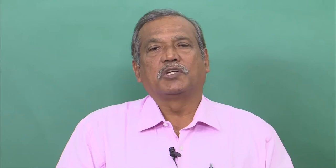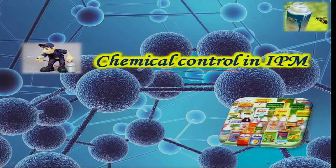What needs to be done for using chemical pesticides? What are the strategies to be considered? What are the points to be remembered? We should discuss these in the next two to three classes. Chemical control and IPM — we will relate these over the next two to three classes. What is chemical pest control? That is the basic question we have to answer.